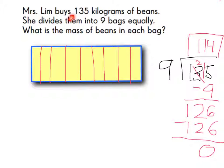Mrs. Slim buys 135 kilograms of beans. She divides them into nine bags equally. What is the mass of the beans in each bag? So 135 divided by 9 equals 15.